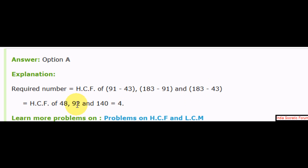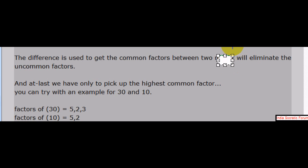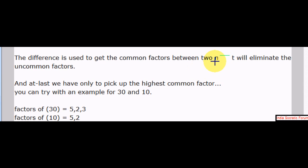It's 48, 92, 140. So you have to find the highest common factor. You know how to find the highest common factor? Yes. Yes, it's as simple as that. Why we need to take this, you can ask, the difference between two numbers. It's very easy. If you take the difference, it eliminates the uncommon factors.